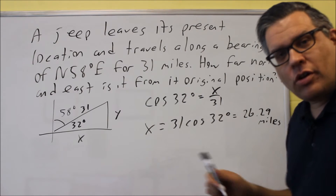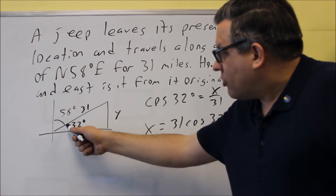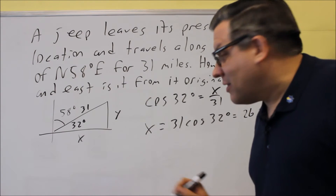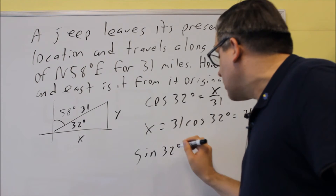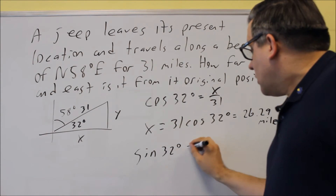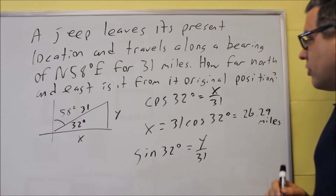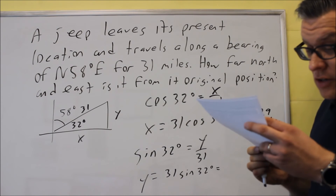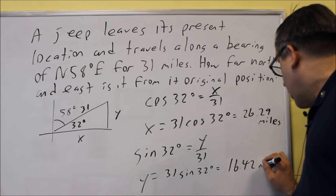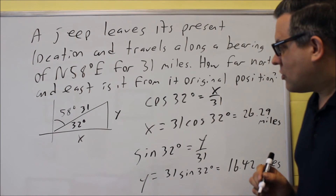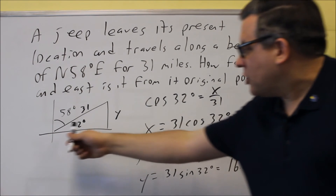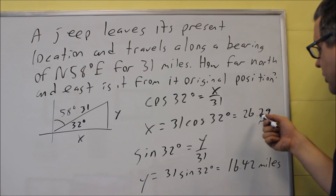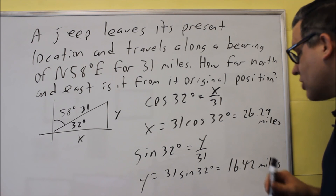Now to find y — how far north it is from the original position. With 32 degrees, we have an opposite side y and a hypotenuse of 31, so we use sine. Sine of 32 degrees equals y over 31. Cross-multiplying gives y equals 31 sine of 32 degrees. Putting that into the calculator gives 16.42 miles — rounded to two decimal places — and that's how far north it is from the original position. So the jeep is 26.29 miles east and 16.42 miles north of its original starting point.